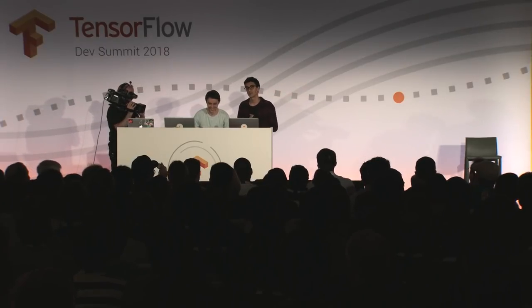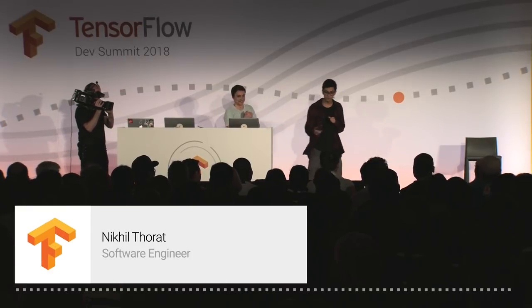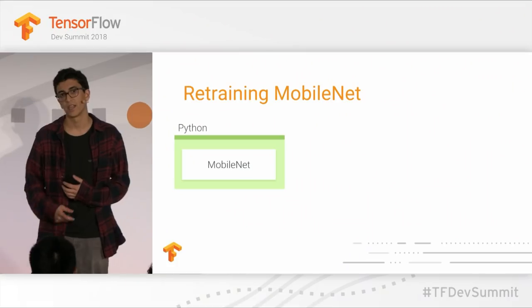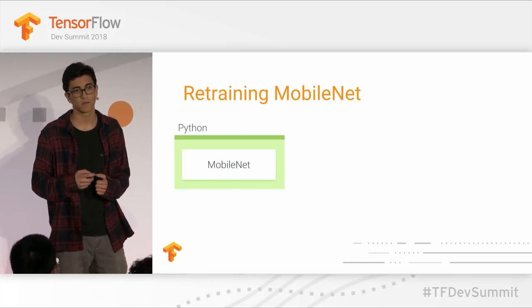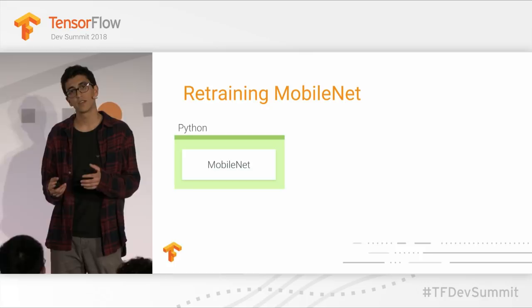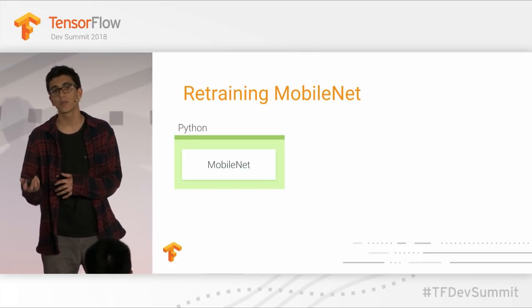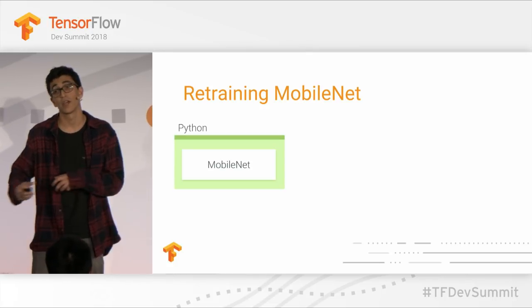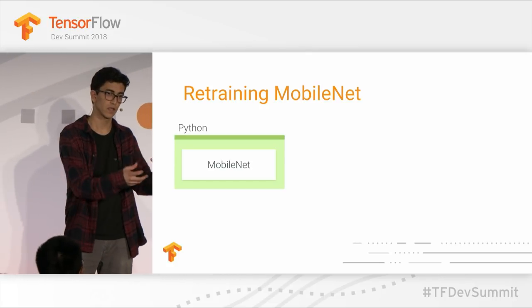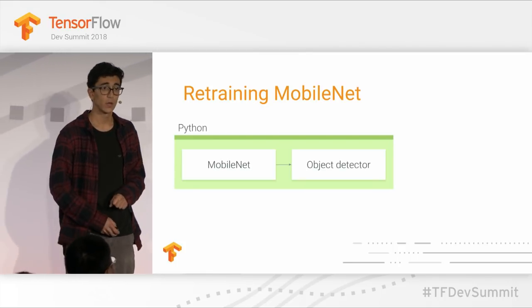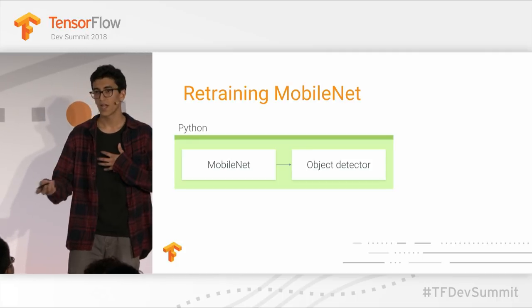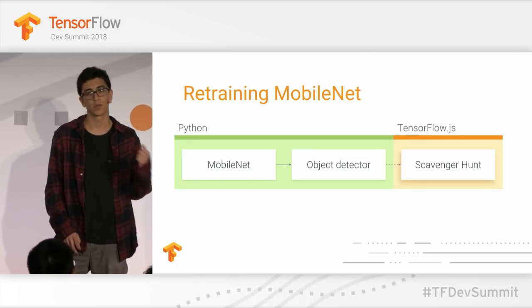Let me jump into the technical details of how we built that game. We trained a model in TensorFlow to be an object recognizer — about 400 different classes that would be reasonable for a game, like watches, bananas, and beer. We used the TensorFlow for Poets Codelab, which has you take a pre-trained MobileNet model — a state-of-the-art computer vision model for edge devices — and retrain it for these classes. Now we have an object detector in Python. How do we actually get this into the browser? We provide a set of tools today that help you do that.